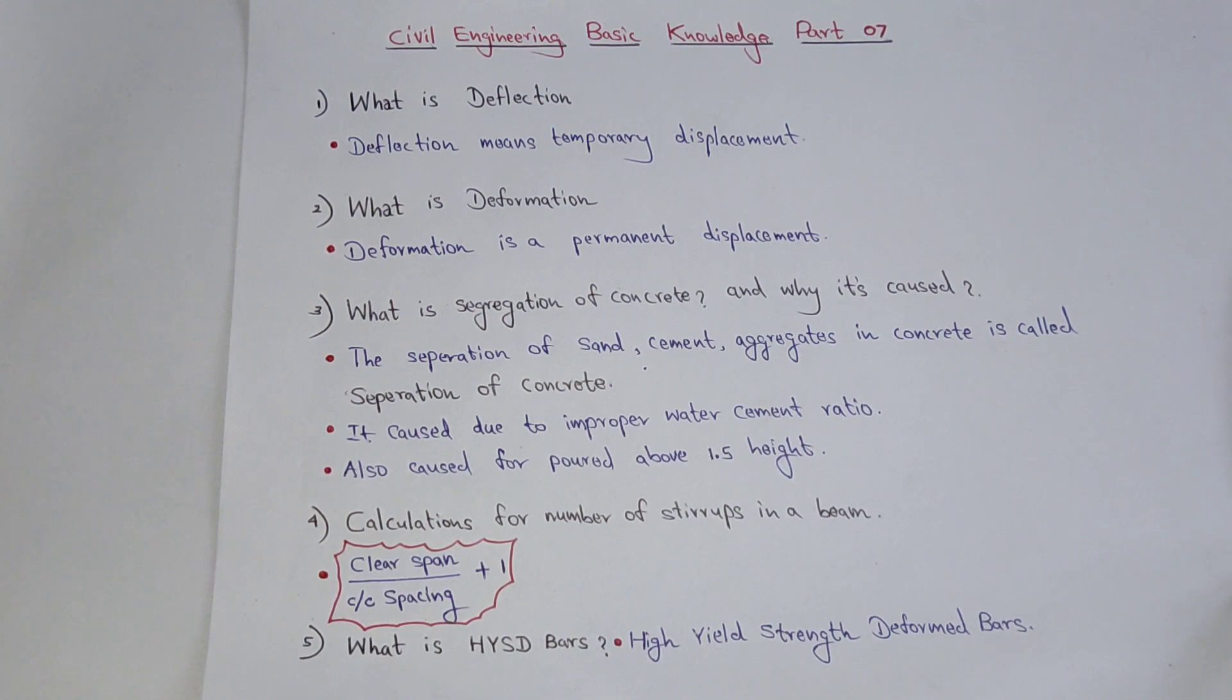Also, pouring concrete from above 1.5 meters in height should be avoided. It should not exceed 1.5 meters in height.